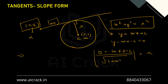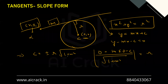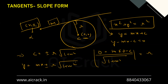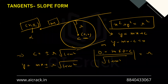This gives c = ±r·√(1 + m²), so the tangent equation becomes y = mx ± r·√(1 + m²). We get a ±  sign because there are two parallel tangents with slope m — one on each side of the circle — both at perpendicular distance r from the center.